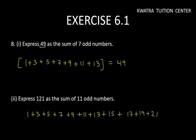Now we have 11 or 10? Now we have 10. Then we have another number, 23. You will get 121 as the sum of these 11 odd numbers.